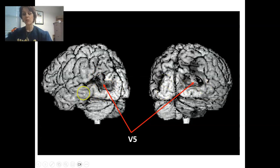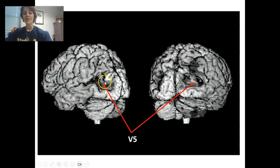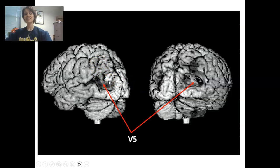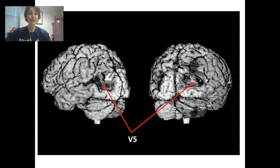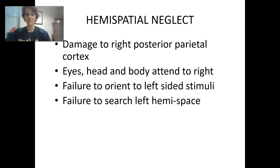Our ventral stream will be heading down the inferior temporal cortex, while the dorsal stream moves towards the posterior parietal cortex. V5 is considered part of that dorsal stream.